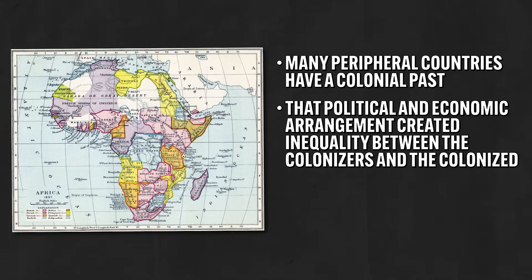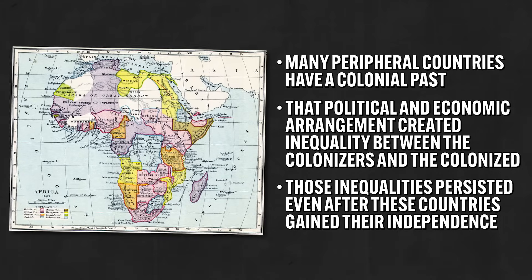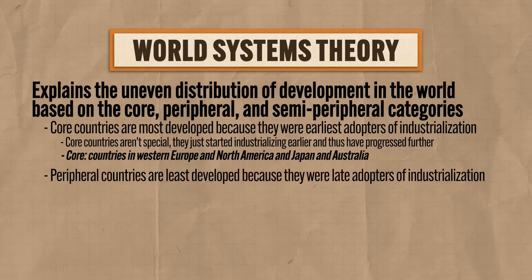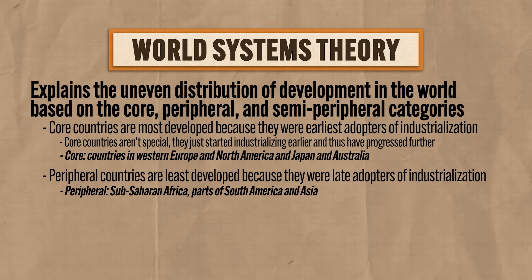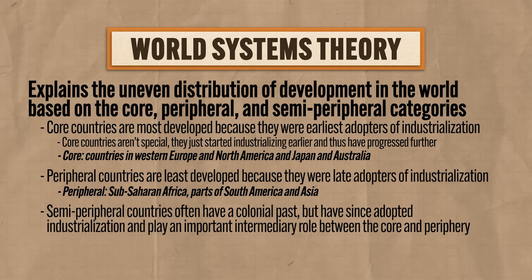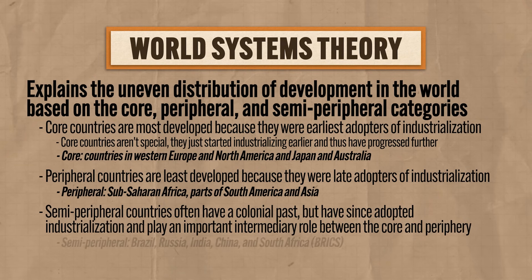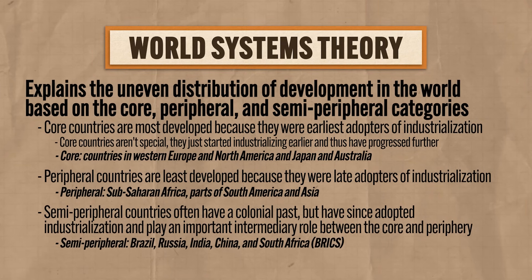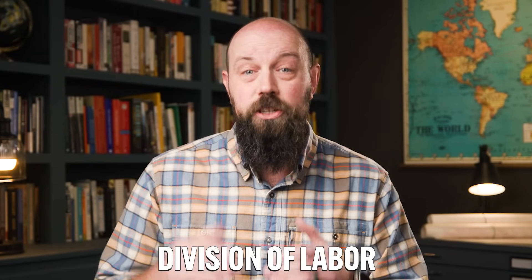The answer is imperialism — the answer is always imperialism. Many peripheral countries have a colonial past, and because that political and economic arrangement created inequality between the colonizers and the colonized, those inequalities persisted even after those countries gained their independence — including countries in Sub-Saharan Africa, parts of South America, and Asia. Semi-peripheral countries are places that also often have a colonial past but have since adopted industrialization and play an important intermediary role between core and periphery. The best examples are the BRICS countries: Brazil, Russia, India, China, and South Africa. To sum up, according to this theory, every country's economy is connected to every other country's economy, and the international division of labor — core countries in tertiary and above sectors, semi-peripheral in primary, secondary, and tertiary, and peripheral in the primary sector — explains why some countries are more or less developed than others.